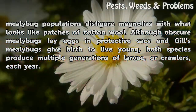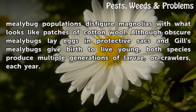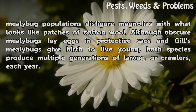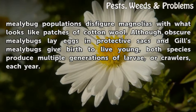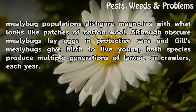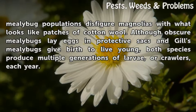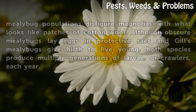Although obscure mealy bugs lay eggs in protective sacks and Gill's mealy bugs give birth to live young, both species produce multiple generations of larvae, or crawlers, each year.